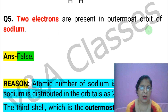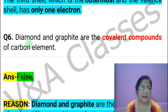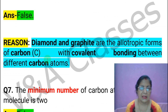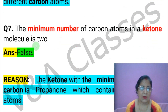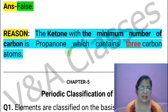Next statement: Two electrons are present in the outermost orbit of sodium. This statement is FALSE. Next statement: Diamond and graphite are covalent compounds of the carbon element. This statement is FALSE. Next statement: The minimum number of carbon atoms in a ketone molecule is three. This statement is FALSE.